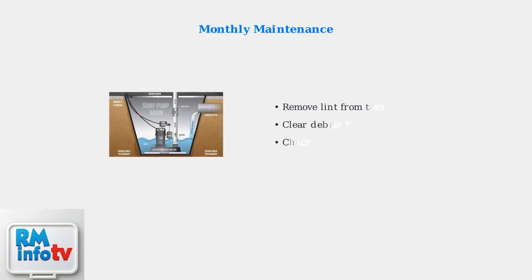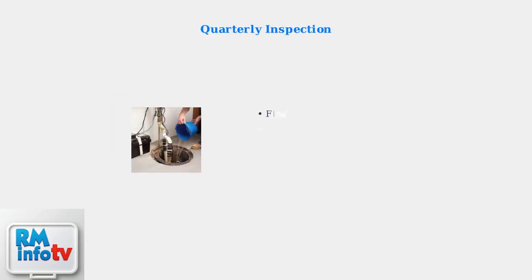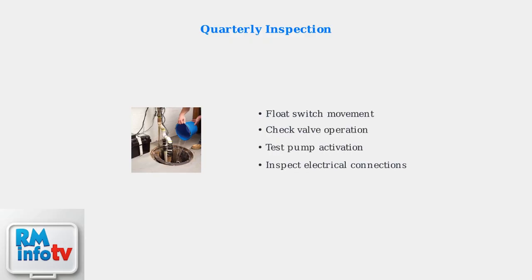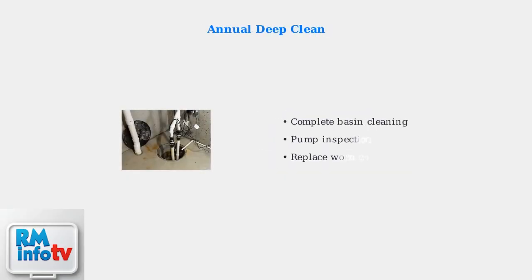Monthly maintenance is simple but critical: remove lint and debris from the trap to prevent clogs. This takes just a few minutes but prevents major problems. Every three months, inspect the float switch and check valve — these components control pump operation and prevent backflow. Look for damage, debris, or wear.